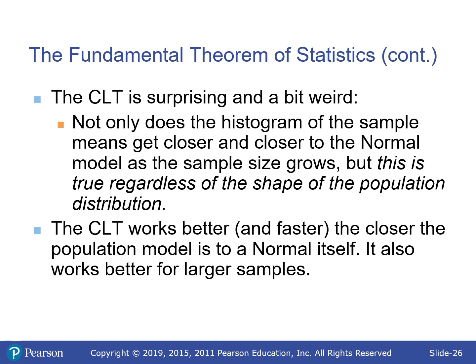It's a bit surprising — regardless of the shape of the population, even an asymmetric one, within about a sample size of 20 it's going to be pretty close to normal. The CLT works better and faster the closer the population is to normal already. If the population is normal, even a sample size of 1 works. The further from normal, the bigger the sample size needed — but a sample of 20 is generally sufficient even for the most skewed distributions.